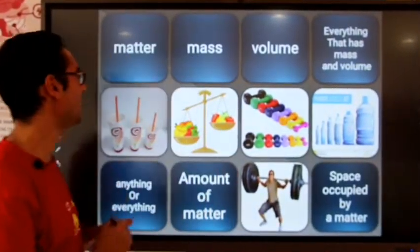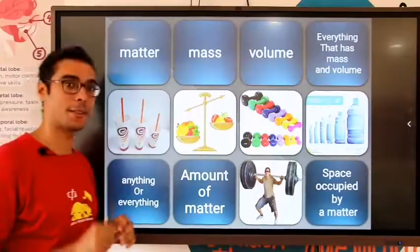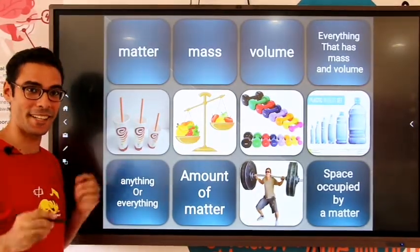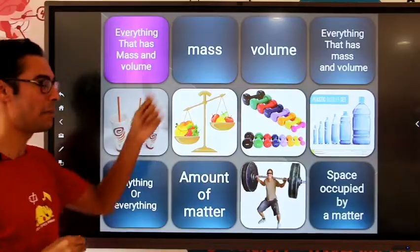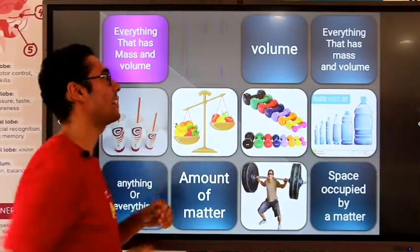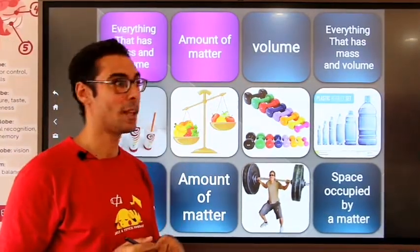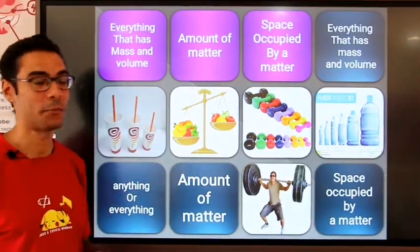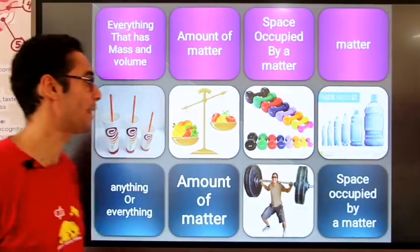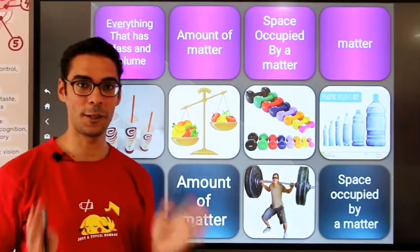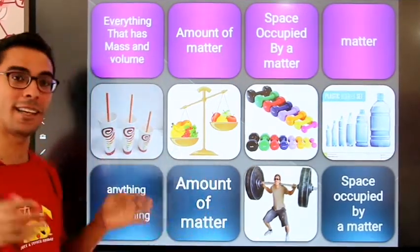The final assessment we have is represented in some flashcards. Can you predict what is behind each flashcard? Matter is everything or anything around us that has mass and volume. Mass refers to how heavy things are or the amount of matter in an object. Volume is the space occupied by the matter. Everything that has mass and volume — that's matter. I'll leave the rest of the flashcards for you. Try to predict the correct description or answer behind each one.